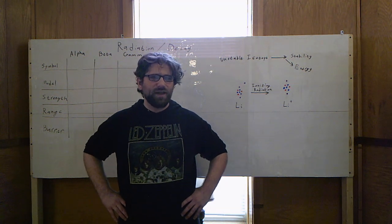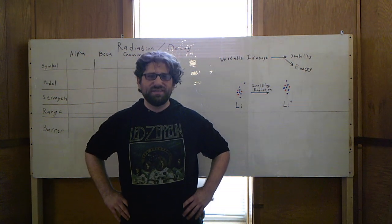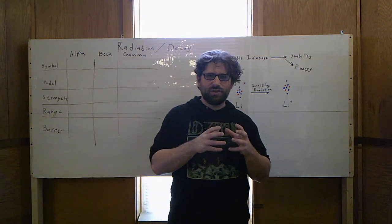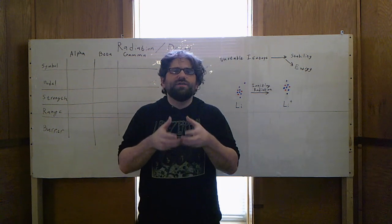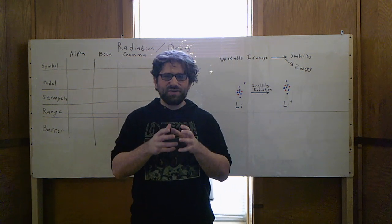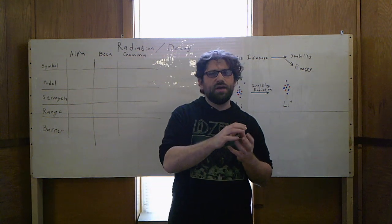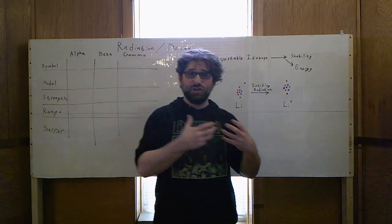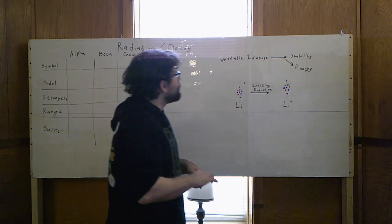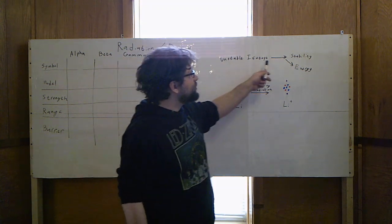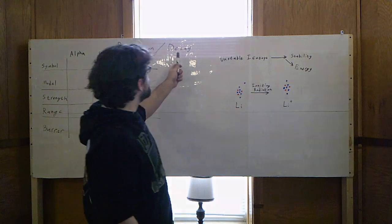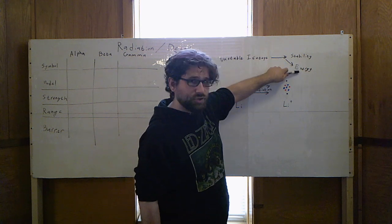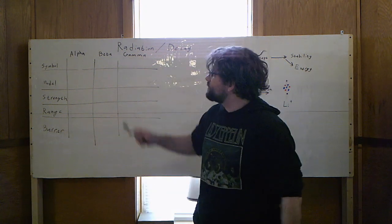Sometimes isotopes of different elements can be unstable. What that means is that there's something about them that needs to change — they can't exist according to the current laws of physics, so they need to change something in order to be able to exist. Maybe there's an imbalance of forces. A really simple way to think about it is they're unhappy and they need to change. So when an unstable isotope changes to achieve stability, we call that nuclear decay. When that decay happens, it will release energy, and the name we have for that energy that gets released is radiation.